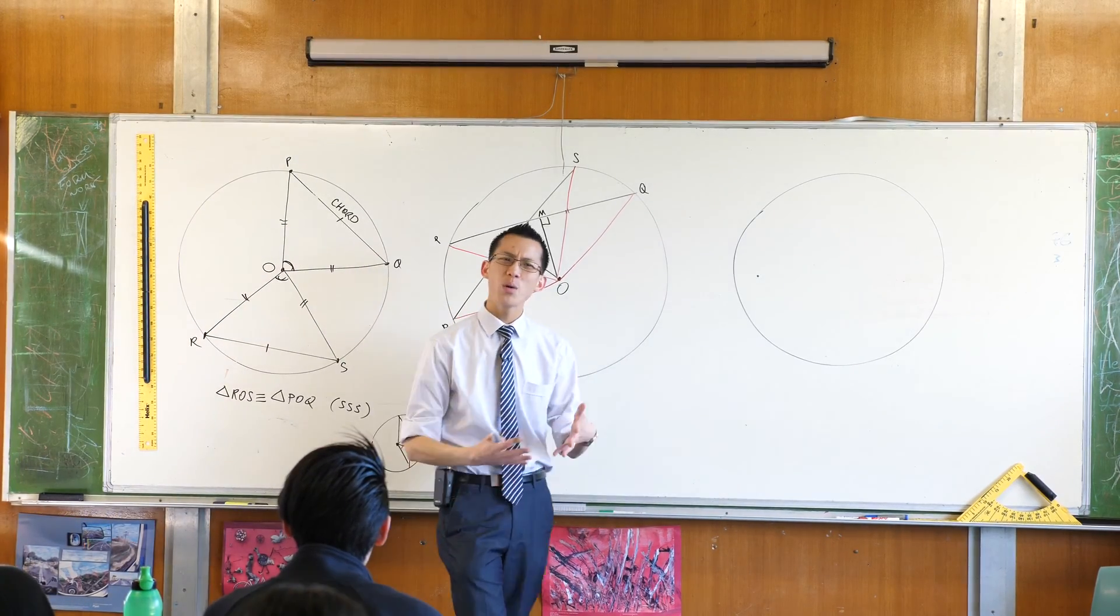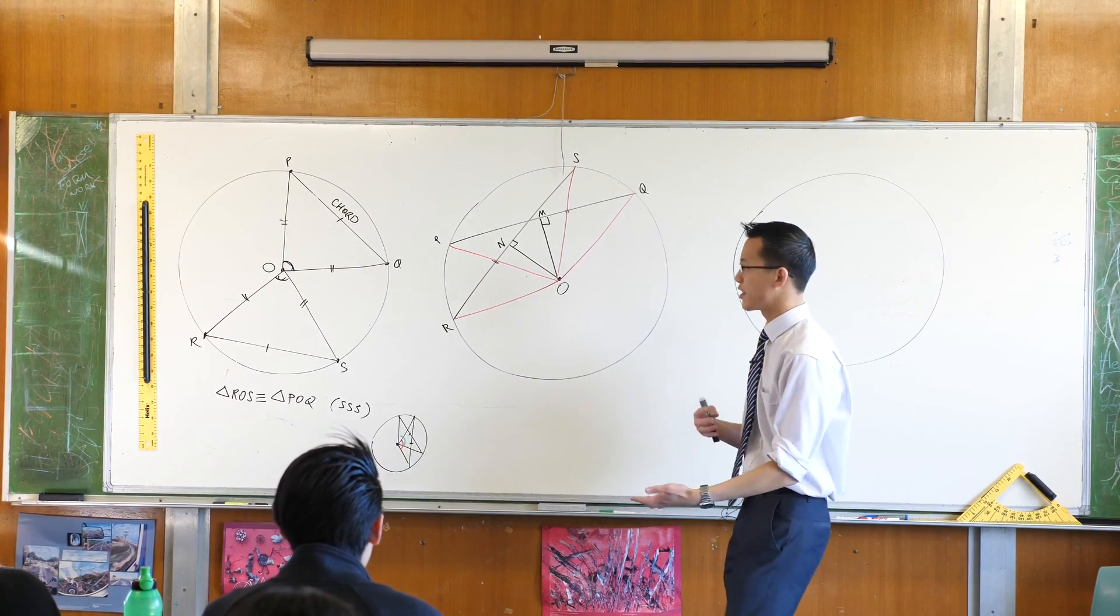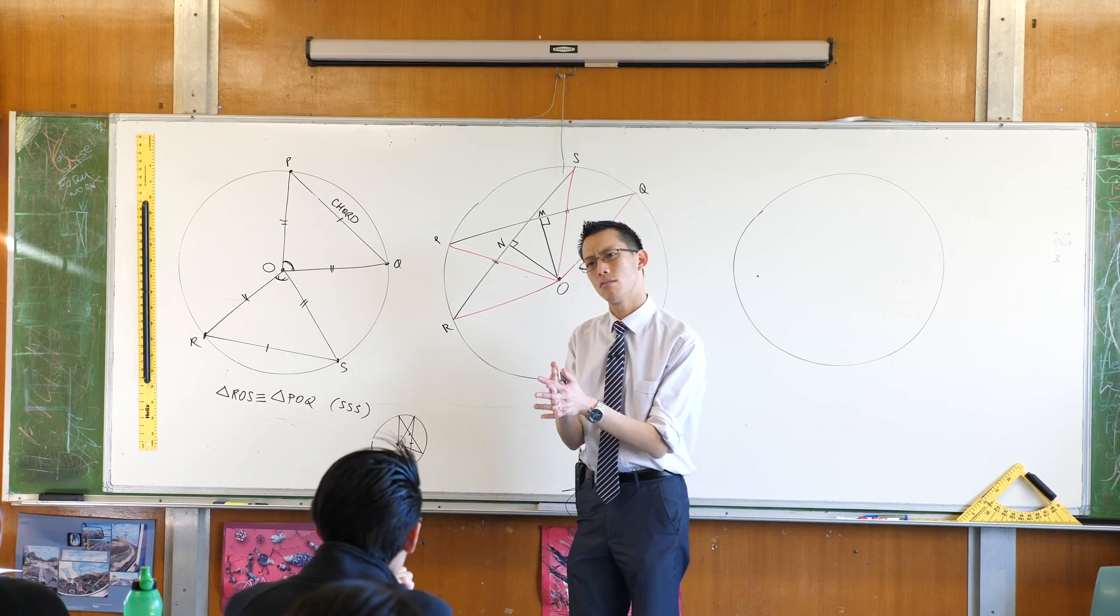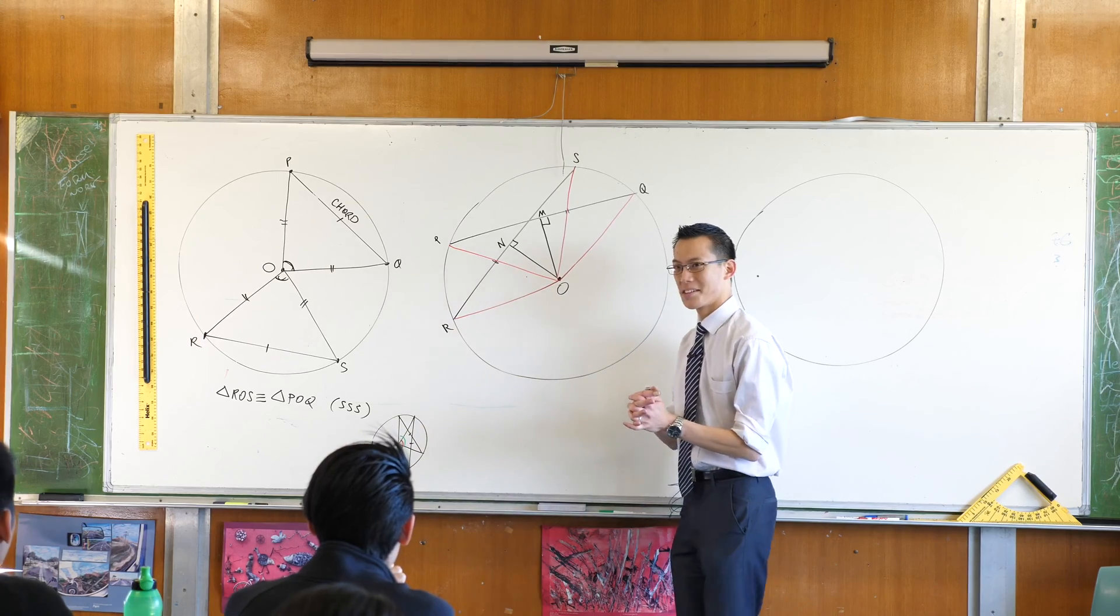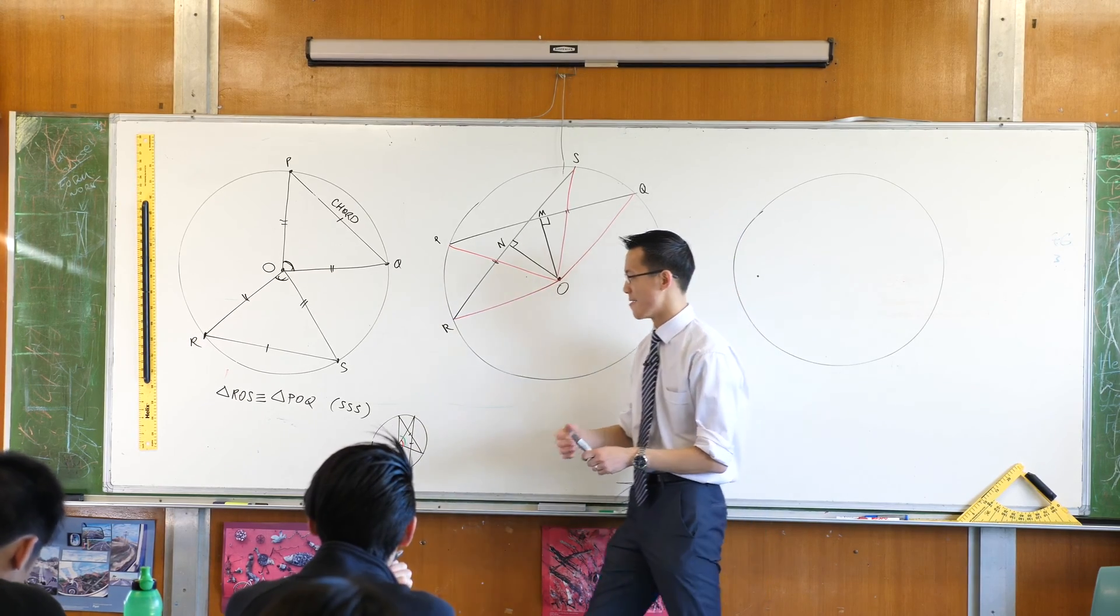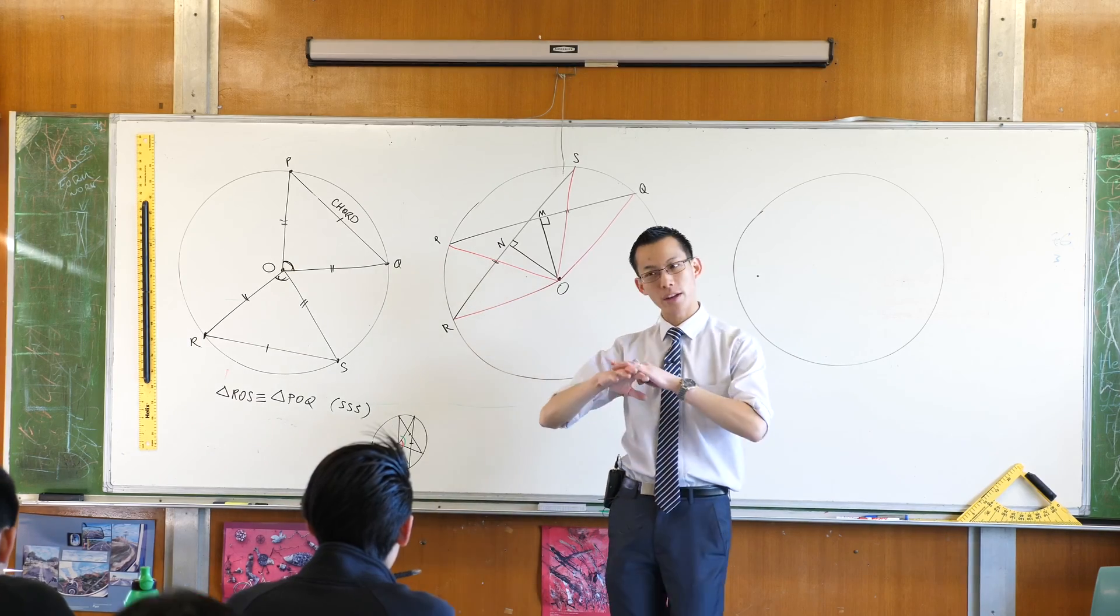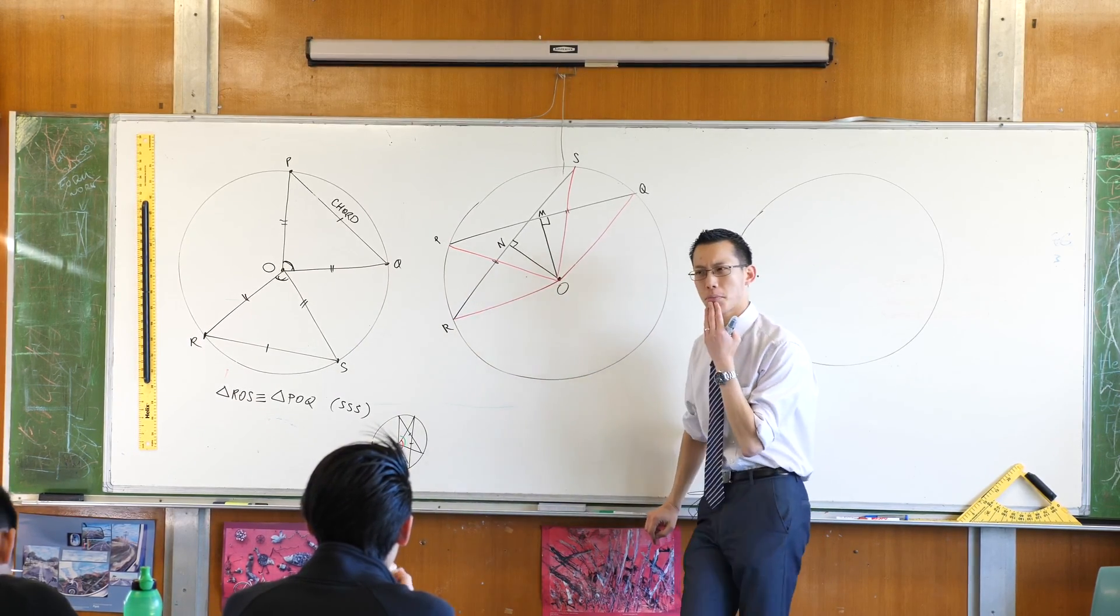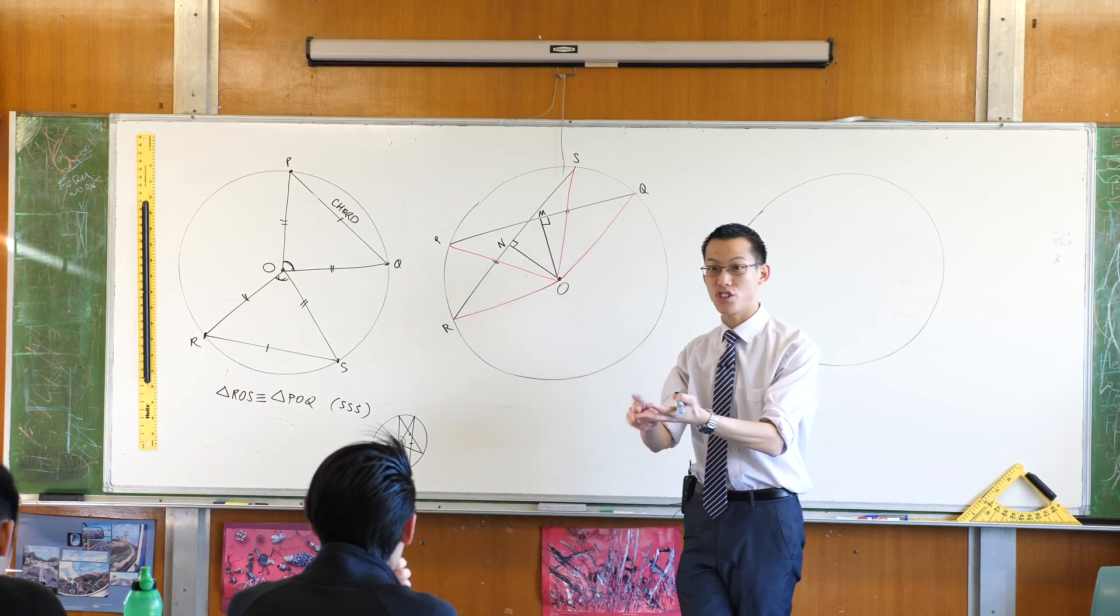But remember, what does congruent mean? If someone had never heard the word congruent, and you wanted to give them a synonym or a phrase that meant the same thing as congruent, what would you say? What would be your definition? We've been using the word congruent for a long time. We have a symbol for it, and we know how to prove it. If the word congruent was struck out from the English language, what word could we use to replace it?